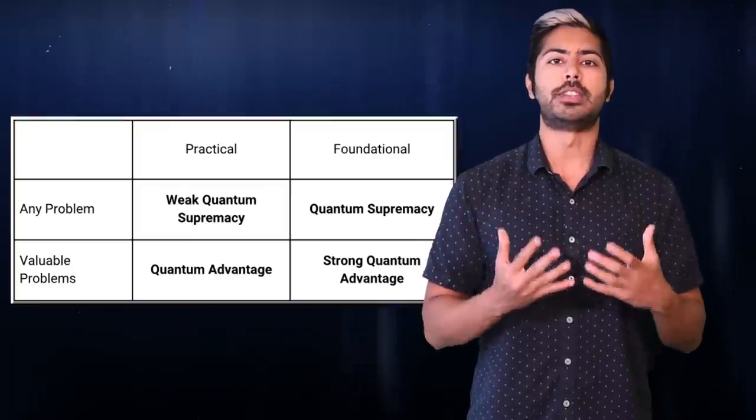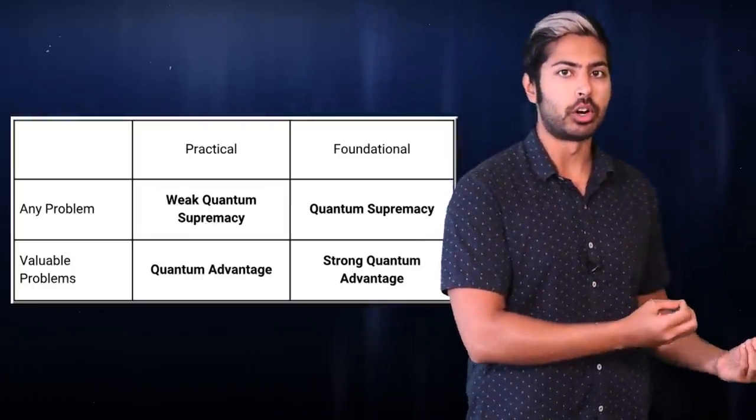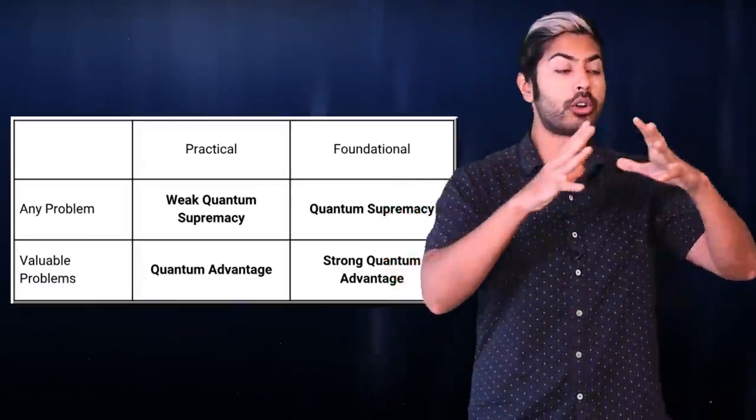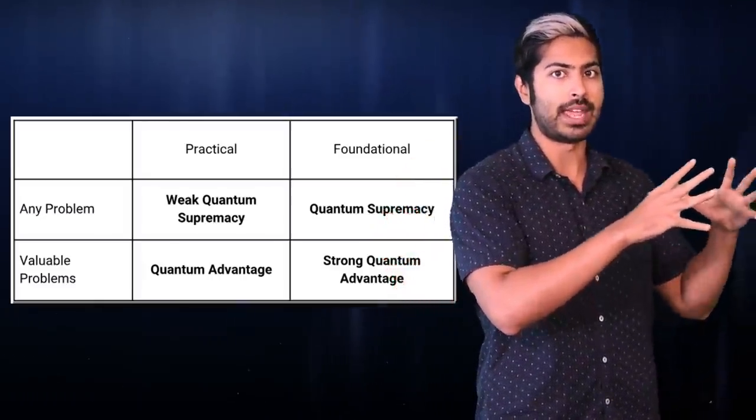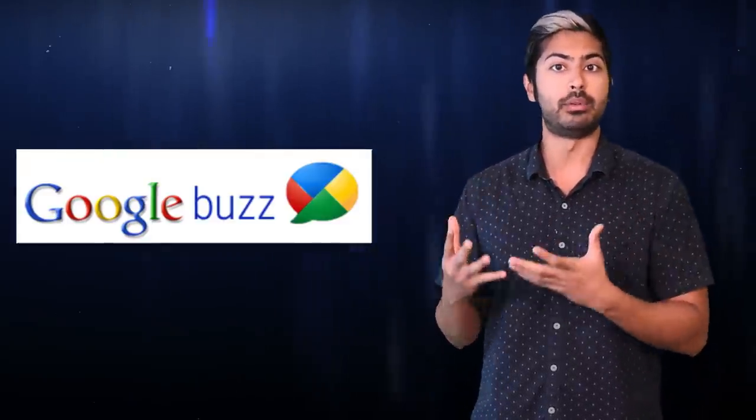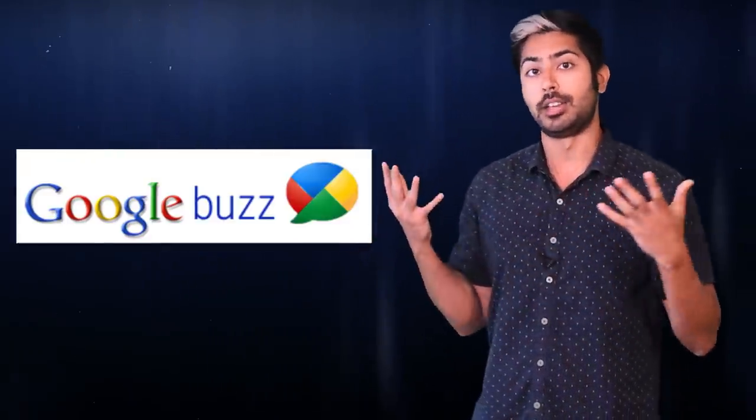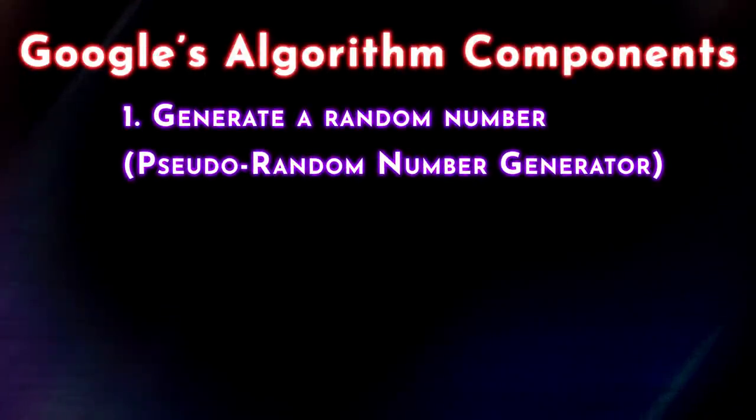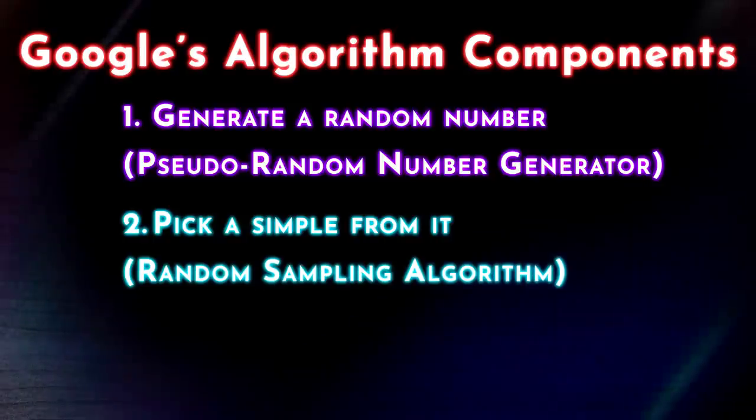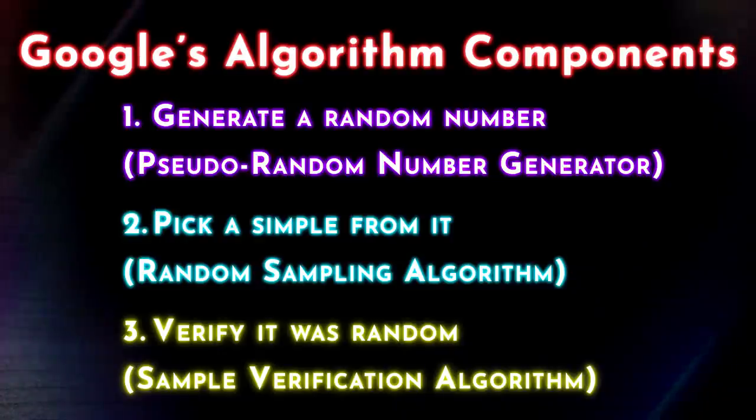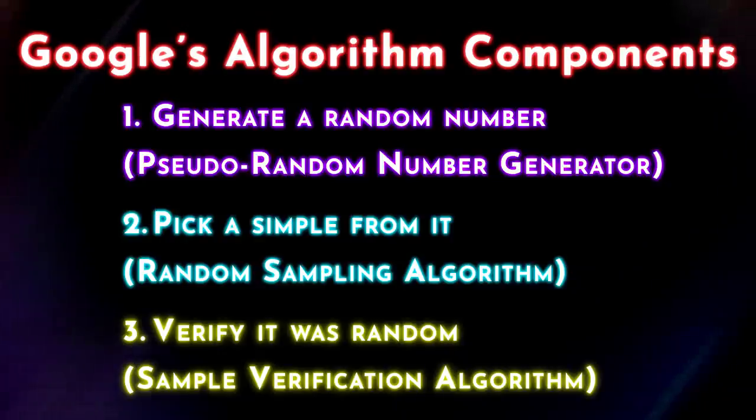Quantum supremacy is a word used to describe a quantum computer that could solve some well-defined set of problems that would take orders of magnitude longer to solve with any currently known techniques running on existing computers. The calculation that Google attempted was pretty simple to understand. Their experiment consisted of three components: a pseudo-random number generator, a random sampling algorithm, and an algorithm that can verify randomness based on the sample.